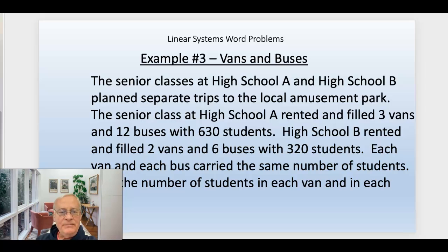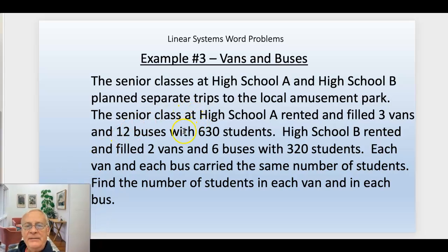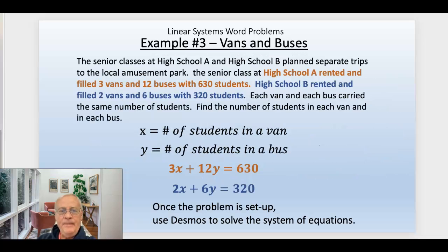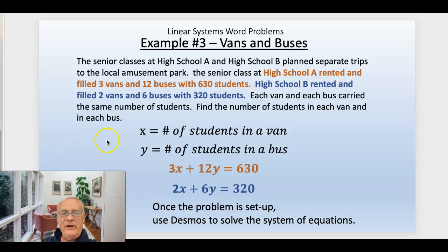The last one is vans and buses. The senior class at high school A and high school B planned separate trips to the local amusement park. High school A rented and filled three vans and 12 buses with 630 students. High school B rented two vans and six buses and filled them with 320 students. Each van carries the same number as each other van, and each bus carries the same number as each other bus. We want to find the number of students in each van and each bus. We define our variables: X is the number of students in the van, and Y is the number of students in the bus.